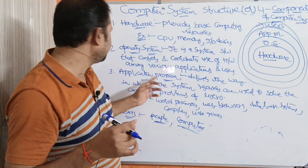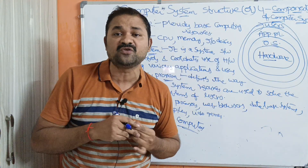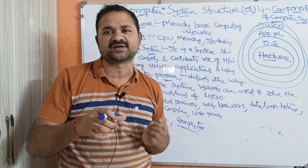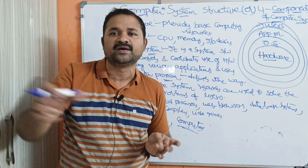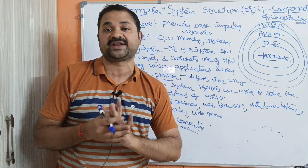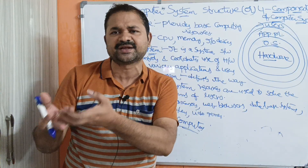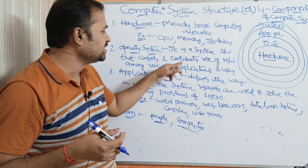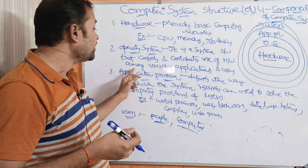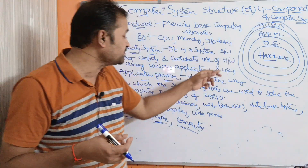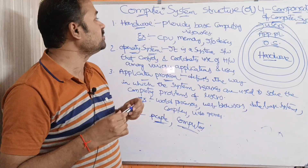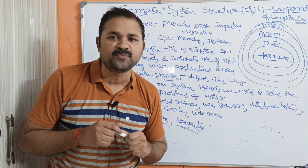Here we have two types of software: application software and system software. An application program is application software, defined by the user. System software is software with which we can use the computer in an efficient manner. The operating system is system software because with its help we can make use of the computer efficiently. It controls and coordinates use of the hardware among various applications and users.